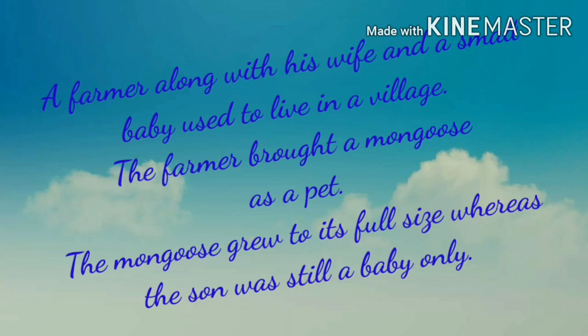A farmer, along with his wife and a small baby, used to live in a village. Both he and his wife loved their child. One day, the farmer expressed a wish to bring a pet to give as a companion to their son. His wife also liked that idea and agreed. The farmer brought a baby mongoose as a pet. Both the baby mongoose and his son grew; within five or six months, the mongoose grew to its full size, whereas the farmer's son was still a baby only.